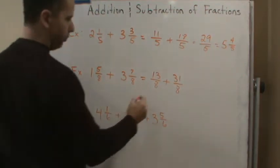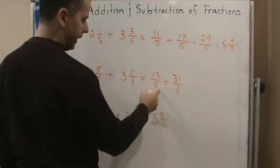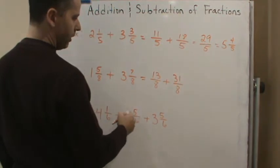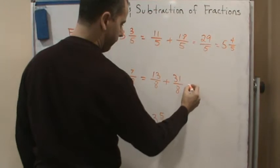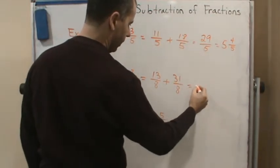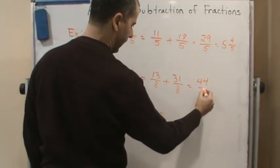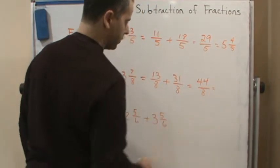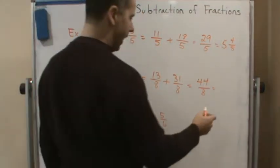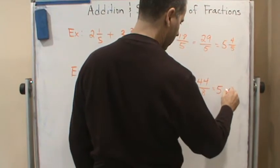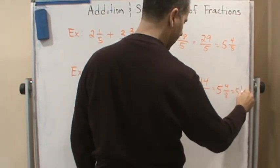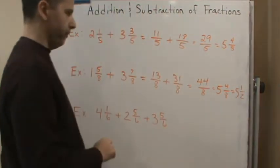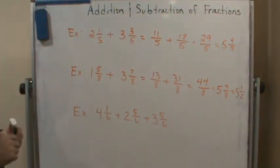Again, common denominator, so we add across the top and keep the bottom. This gives us 44/8, which gives us 5 and 4/8, which is equal to 5 and 1/2.